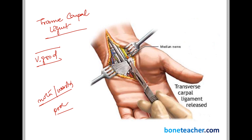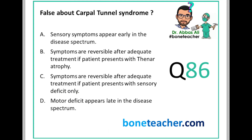Now let's attempt the MCQ. A - sensory symptoms appear early in the disease spectrum: true. B - symptoms are reversible after adequate treatment if the patient presents with thenar atrophy: no — if thenar atrophy is present, it is already too late and symptoms are definitely not reversible, so this is the false statement. C - symptoms are reversible with sensory deficit only: true. D - motor deficit appears late: absolutely true. The answer is B.